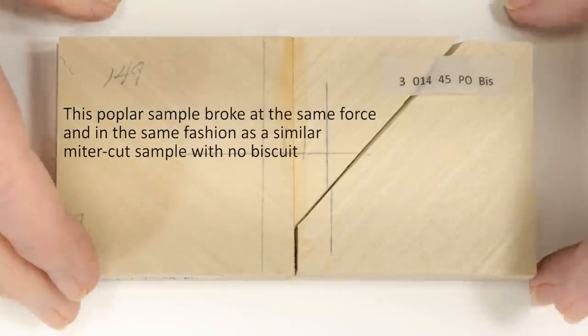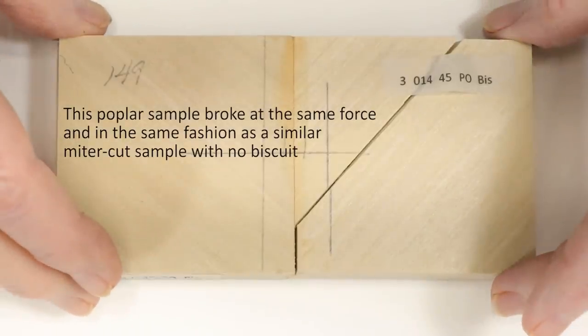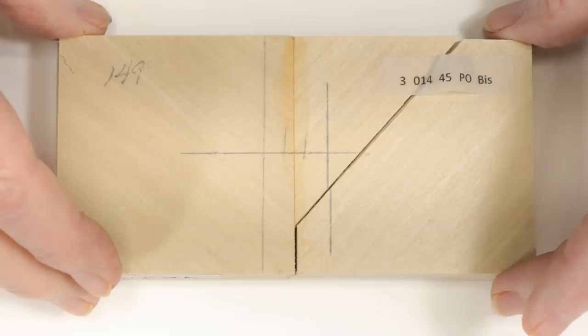No. The miter joints with biscuits broke at about the same force as miter joints simply butted together. And just like miter butt joints, we frequently get splits in the lignin bonds running along the grain.